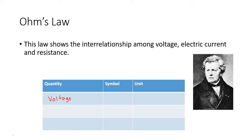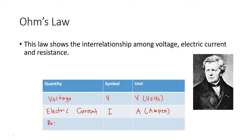First, let's talk about voltage. Voltage is represented by capital letter V, and its unit is also capital letter V, which means volts. We also have electric current, which is represented by capital letter I, and its unit is represented by capital letter A, which means ampere.